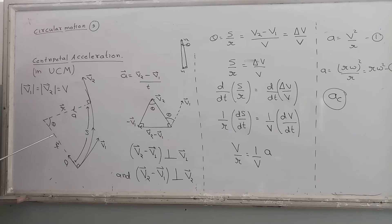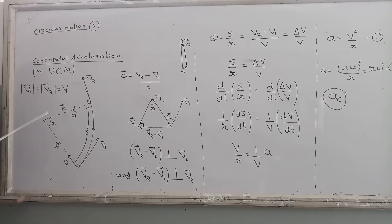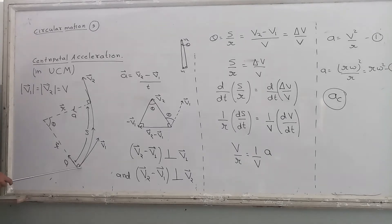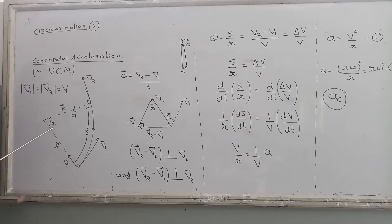One thing to note from this diagram: the angle theta is actually a very small angle. In the diagram it seems very large because I have to show the change in velocity clearly. The velocity changes even after a very small distance, so these two points could be drawn very close together, but the diagram is shown large so that calculations are easy. You must assume that theta is very small.